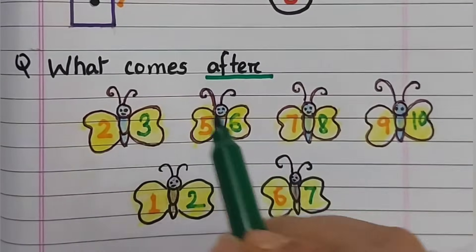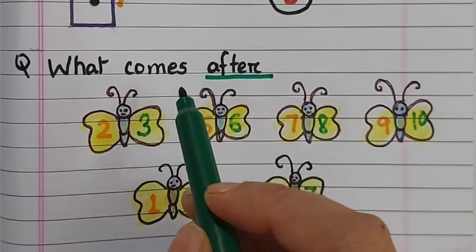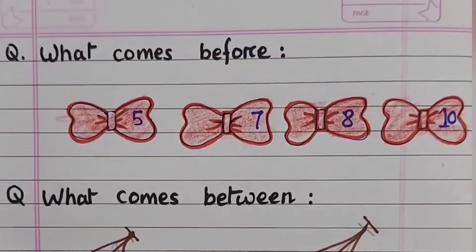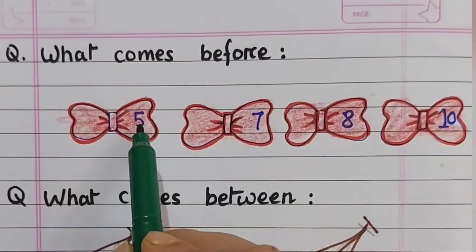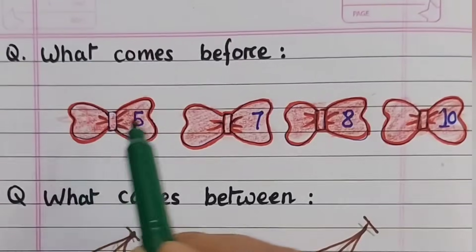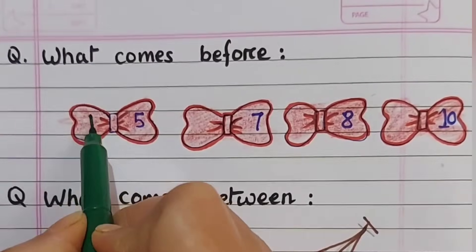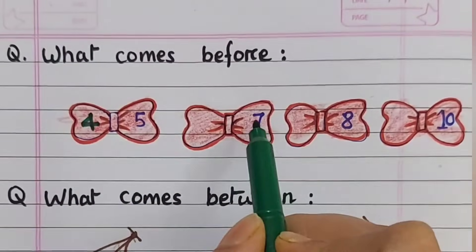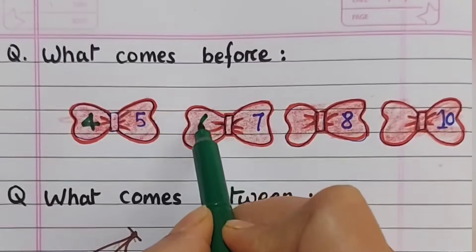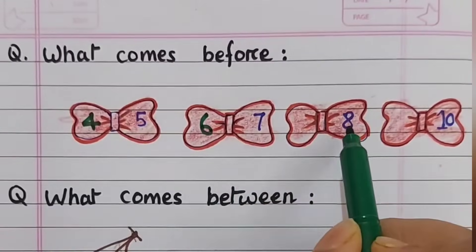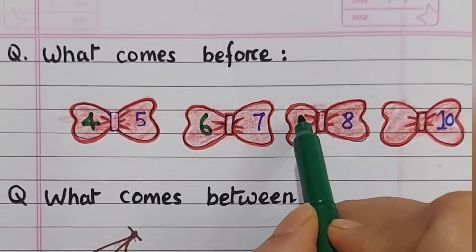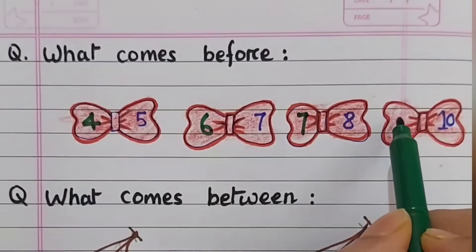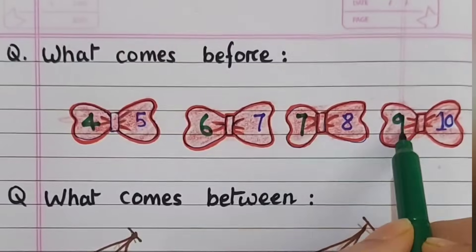What comes before? Before five, the answer is four. Before seven, the answer is six. Before nine, the answer is eight. Before eight, the answer is seven. Before ten, the answer is nine.